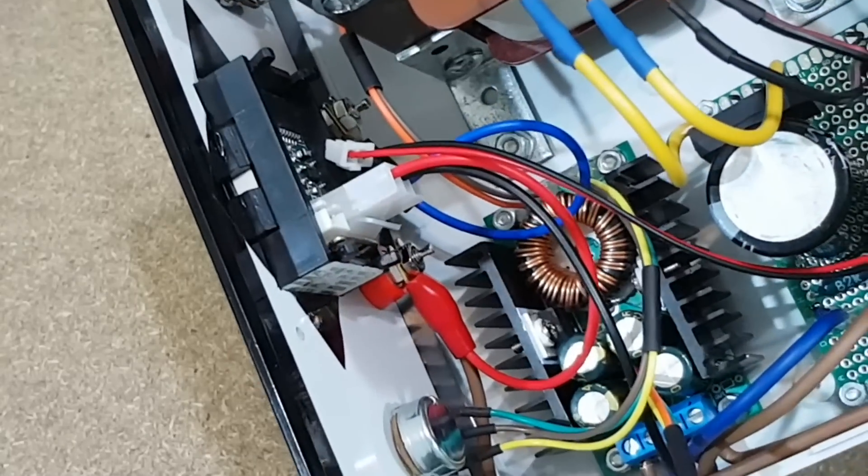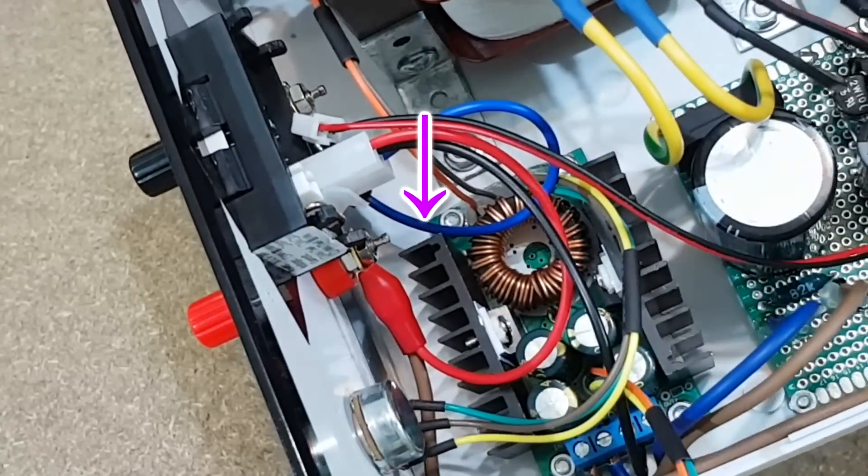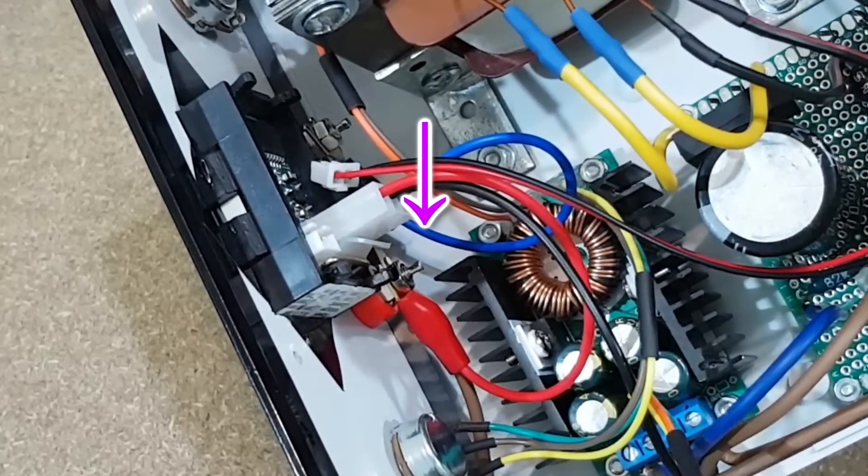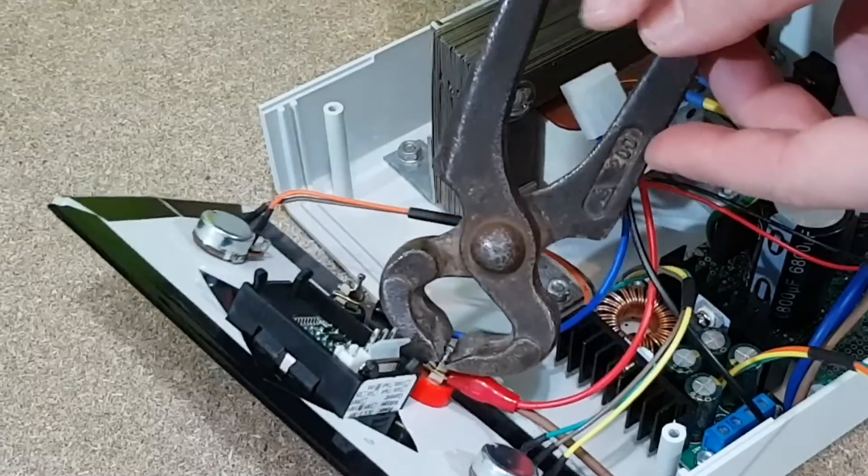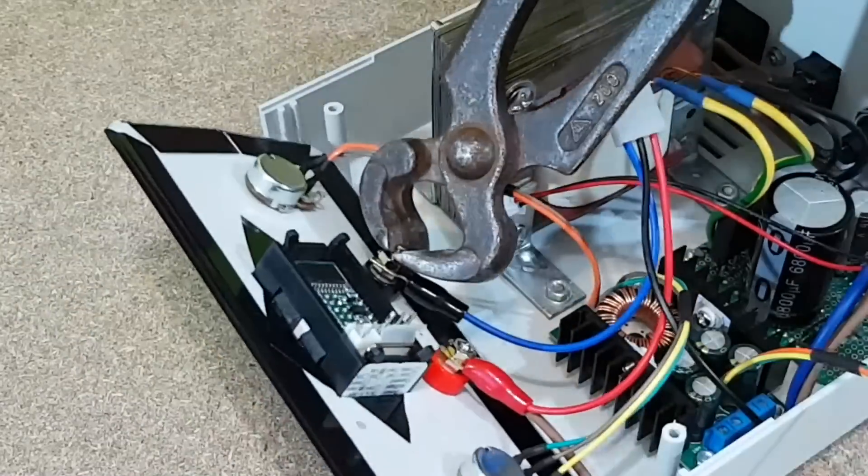The tip of the red binding post connector is too close to the step-down converter. This shouldn't be a problem, but I will cut them anyway. My grandfather's rusty pencils are perfect for this job.